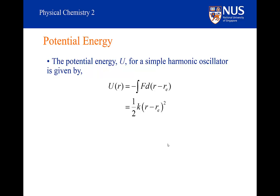If we were to plot the potential energy for this system, we would be plotting a quadratic function. When the displacement is negative — during compression — the potential energy is still positive because it depends on the square of the displacement. As the displacement gets smaller, the potential energy gets smaller, reaching zero when displacement is zero. As the displacement goes positive, the potential energy increases again.